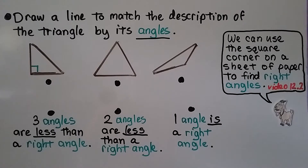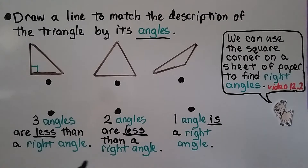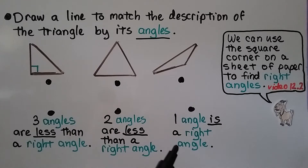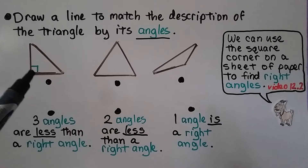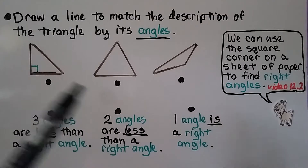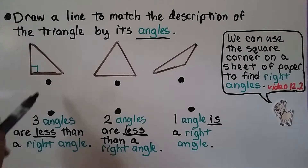Now we need to draw a line to match the description of the triangle by its angles. The descriptions are: three angles are less than a right angle, two angles are less than a right angle, and one angle is a right angle. That last one is easy because we can see the little box indicating a right angle, so we can connect it right away.